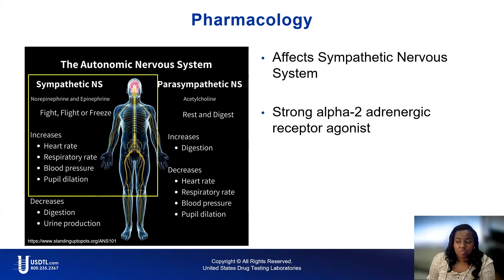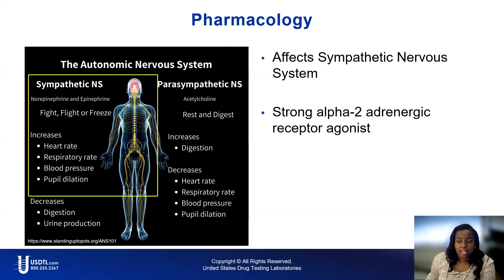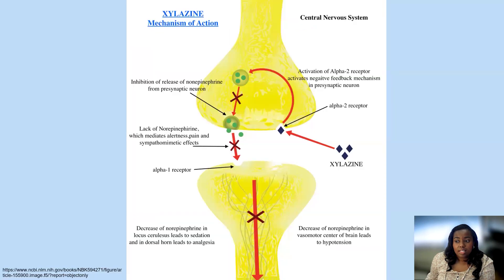Typically, the sympathetic nerves located in the thoracic portion of the spinal cord release norepinephrine into the heart and blood vessels, which increases cardiac output by increasing heart rate, increases contractility, and increases resistivity by squeezing the arteries and constricting veins to increase blood return to the heart. Xylazine suppresses the central drive to release norepinephrine by activating the alpha-2 receptor, which inhibits the release of norepinephrine from the cell membrane into the synapse.